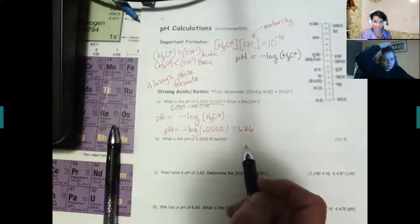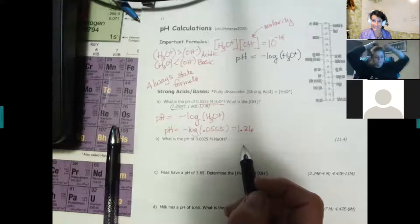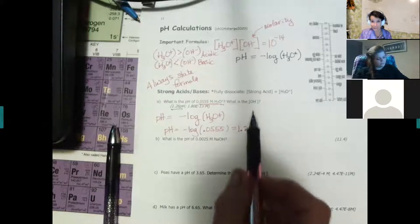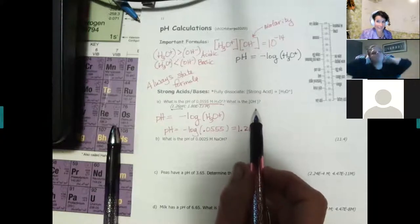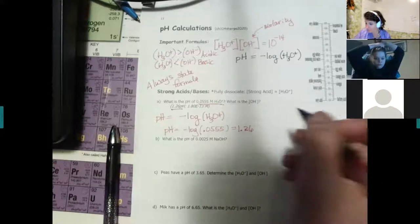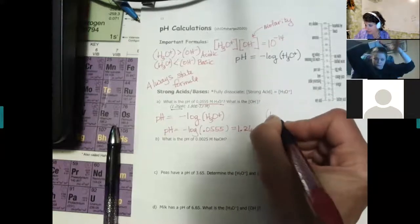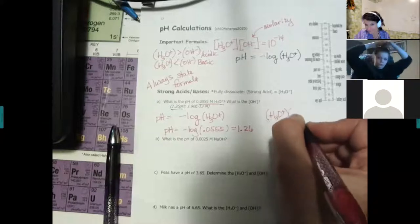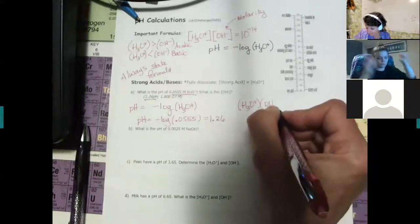The pH is less than 7, so this is extremely acidic. Now we're going to find the hydroxide. State the formula: the hydronium times the hydroxide equals 1×10⁻¹⁴.